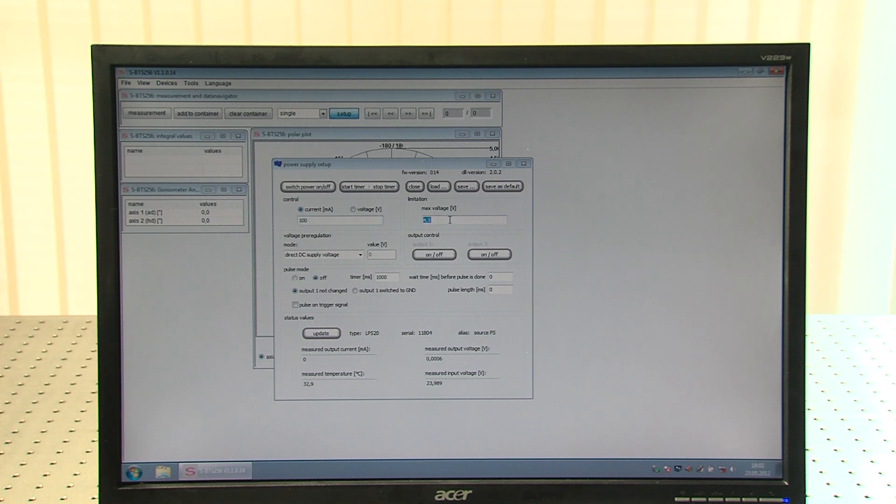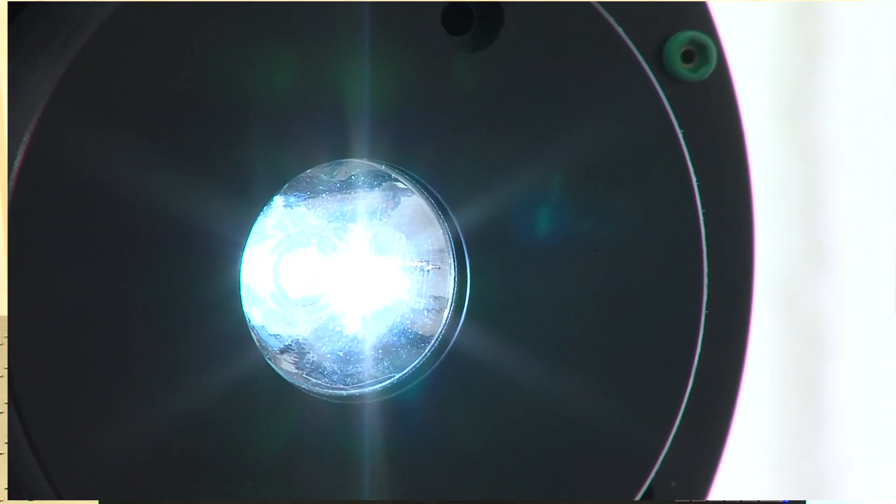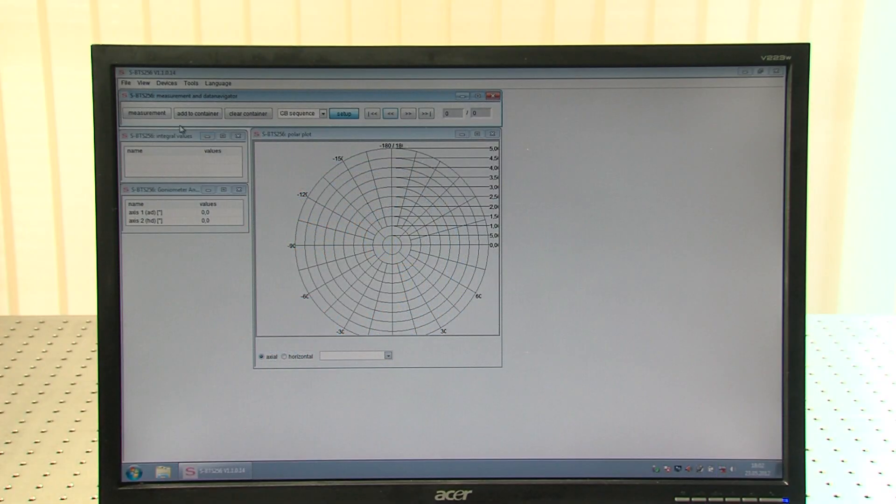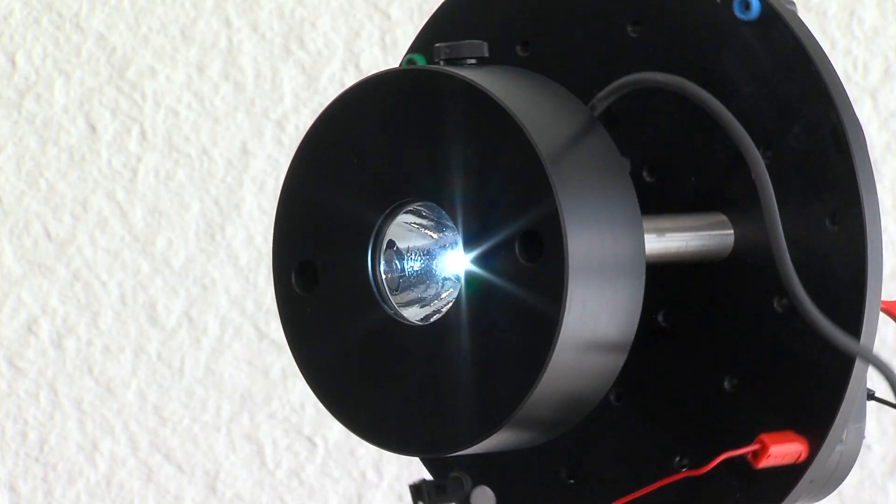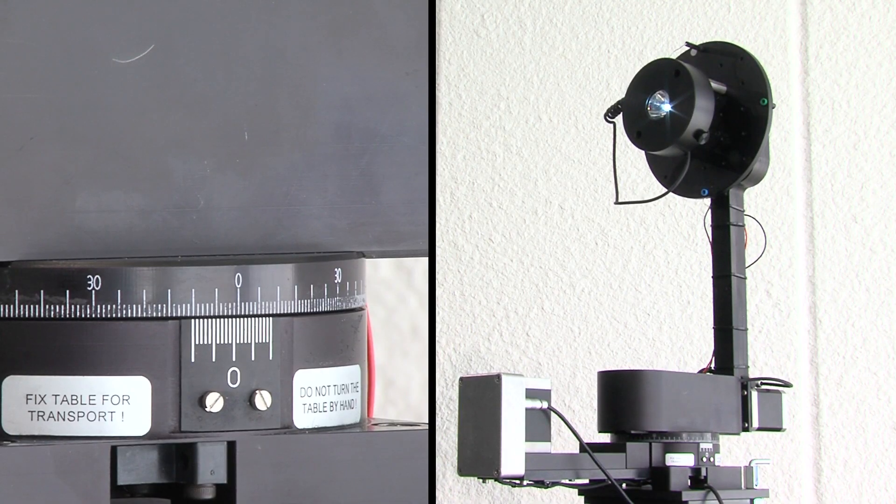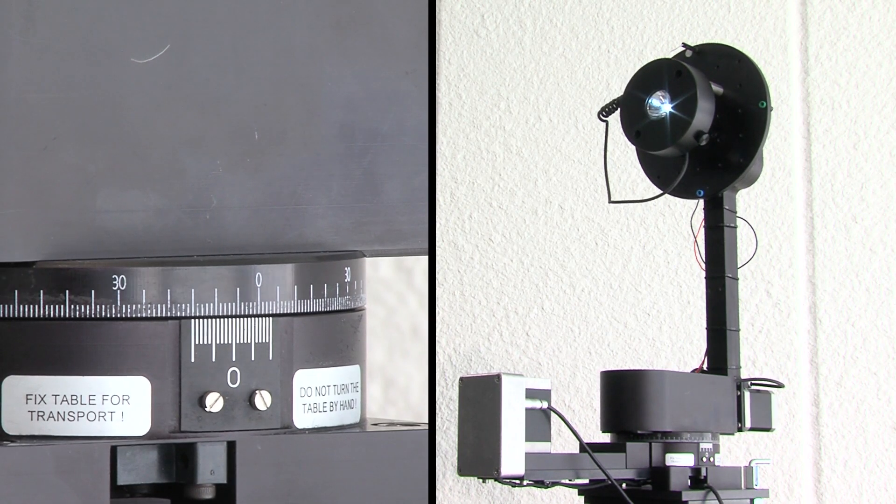Before beginning the measurement, the test lamp must be allowed to stabilize. Start the luminosity distribution measurement which will be based on the preselected measurement sequence from the desktop. Luminous intensity distribution measurement is fully automatic according to the preselected measurement sequence.